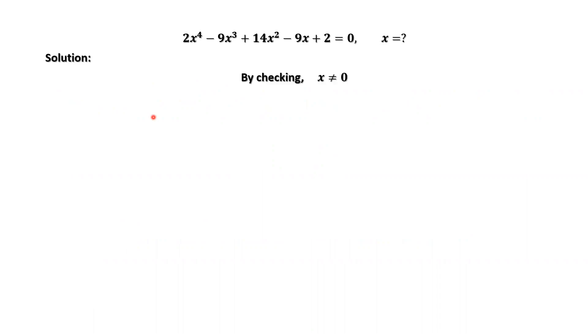By checking, x equals 0 is not a solution. This means x does not equal 0. Therefore, we divide both sides of this equation by x squared.